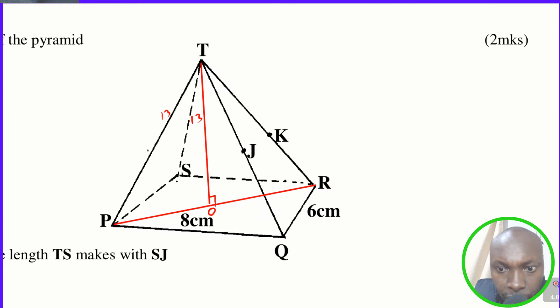So now to get the vertical height, the vertical height of the pyramid will be TO. Now to get TO is a triangle that you're going to extract in order to get that. And the triangle that you're going to extract is triangle TPO.